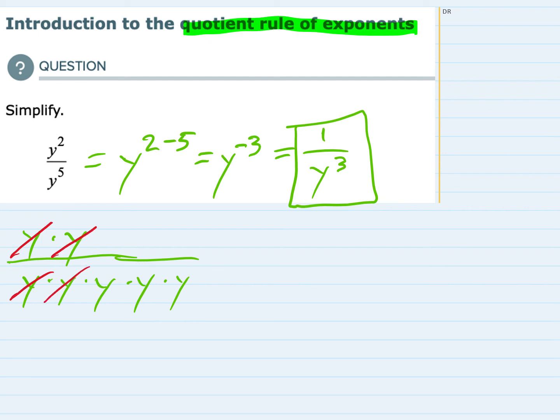We're left with no y's in the numerator, but there's always a 1 there, and we're left with 3 y's in the denominator being multiplied, which is y to the third. So expanding it out like this or using the quotient rule, we come up with the same answer.